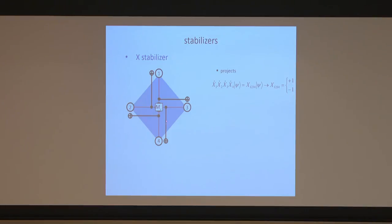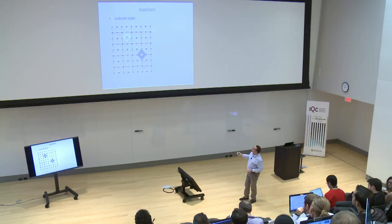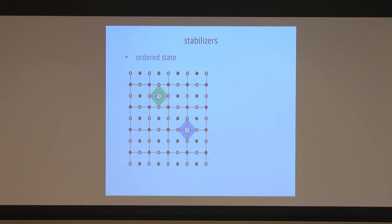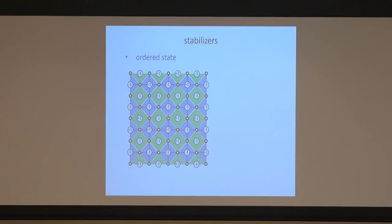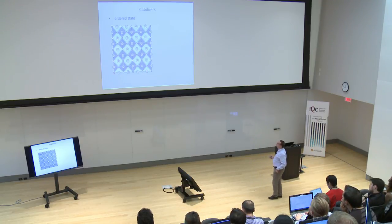The same process applies to the X stabilizer: perform a set of gates to entangle all qubits in the plaquette, measure the center syndrome qubit, and get +1 or −1. We run all these stabilizer measurements simultaneously across the entire lattice, accumulating a stream of ±1 outcomes stored on a classical computer. The first measurement is purely random — quantum mechanics just gives us a series of plus and minus ones across all faces and vertices.